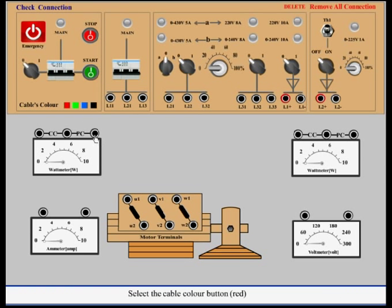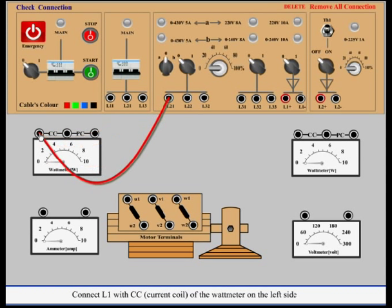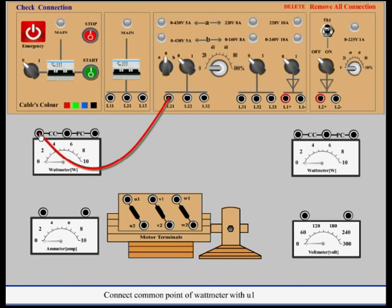Select the cable color red. Connect L1 with CC of the wattmeter on the left side. Connect the common point of the wattmeter with U1.